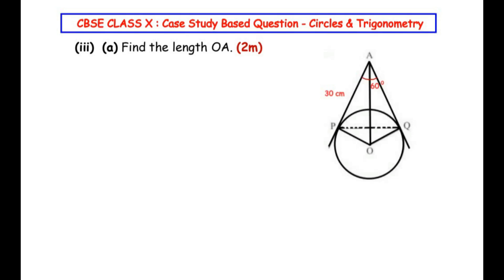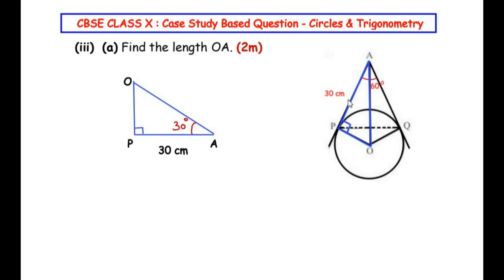Now the third sub-question: find the length OA. I will consider the right-angle triangle OPA, which is right-angled by the radius-tangent theorem. The length of AP is 30 cm. For angle A in this triangle, since the line joining the external point to the center bisects the angle at the external point, the 60-degree angle is divided equally, giving 30 degrees for each triangle. So angle A in triangle OPA is 30 degrees.